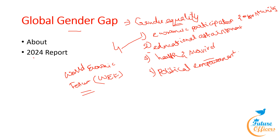Some highlights of the 2024 report: the global gender gap score in 2024 for all 146 countries stands at 68.5%, a 0.1 percentage point improvement on last year. At the current pace, it will take another 134 years to achieve full gender parity. India slipped two places to 129th place. Iceland retained its top position in the rankings for the 15th consecutive year, followed in the top 10 by Finland, Norway, New Zealand, Sweden, Nicaragua, Germany, Namibia, Ireland, and Spain.